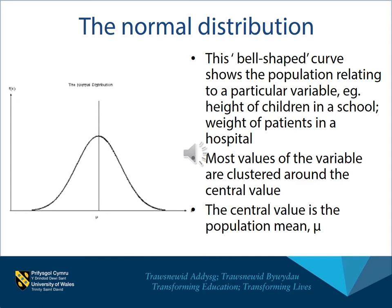So let's imagine that this was the height of children in a school. You might find that most of the children are bunched up in a middle value, some were very short, and some were very tall. Similarly, if you took the weight of all the male patients in a hospital, you might find that most of their weights were bunched up in central values, but some would be very light and some would be very heavy. This graph shows typically what variables are like within most populations, but not all — it's important to realize that there are many populations where this distribution would not be appropriate.